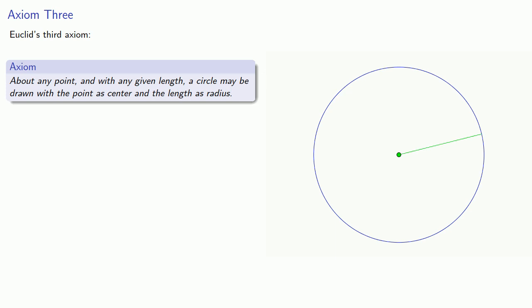And again, the important thing to recognize here is that while we generally think about this as applying in the plane, this is true in three-dimensional space. And the third axiom assumes the existence of circles with arbitrary centers and radii.